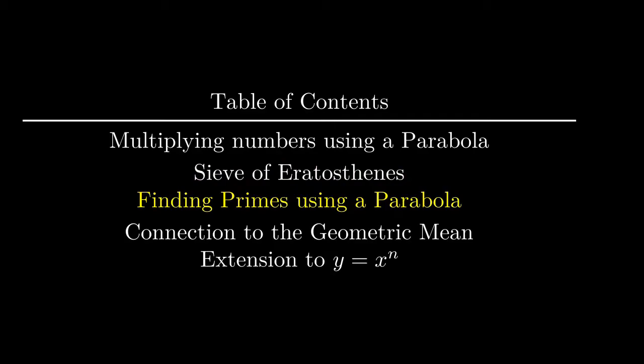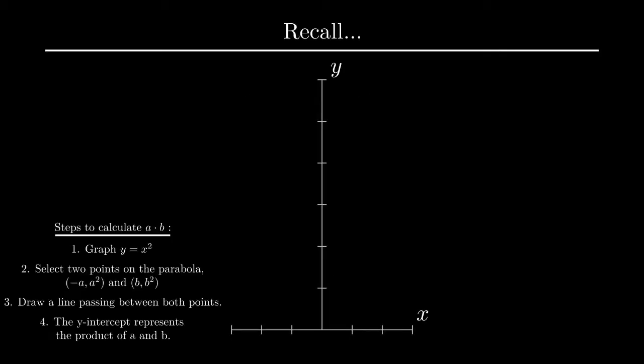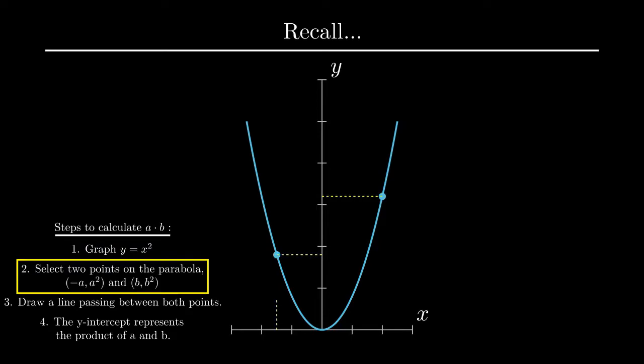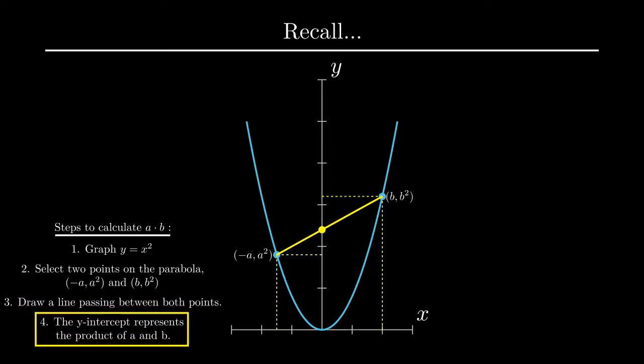First, let's recall what we learned from the first part of the video. If you graph y equals x squared and select two points, negative a, a squared, and b, b squared, on the parabola, and draw a line between both points, then the y-intercept of that line is a multiplied by b.